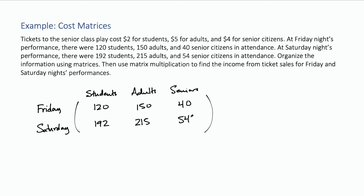This can be thought of as a type of inventory matrix — in each of our days, this is how many of each type of person we had.